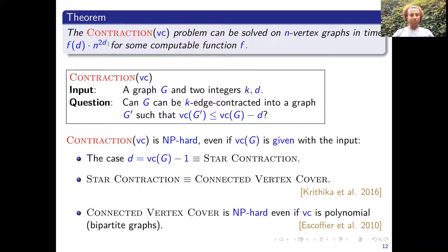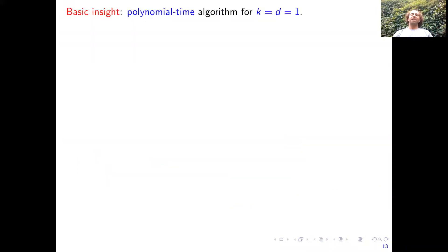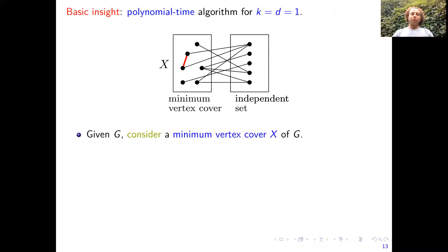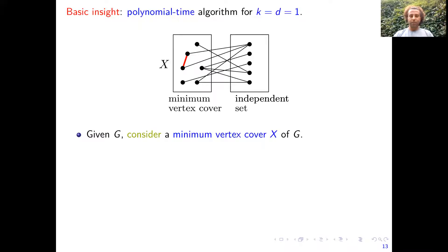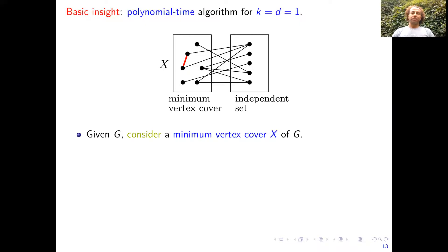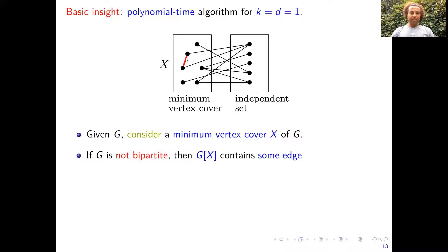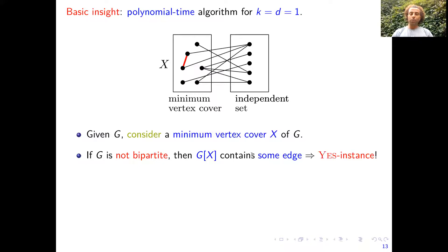Let's sketch how we obtain the algorithm. The main idea is a poly-time algorithm for k equal d equal one. Given a graph G, consider a minimum vertex cover X. The complement is an independent set. The important observation is: if the input graph G is not bipartite, the graph induced by X needs to contain at least one edge. If we just contract this edge, we obtain a graph in which X is still a vertex cover of size one less. So contracting this edge drops the vertex cover by exactly one.